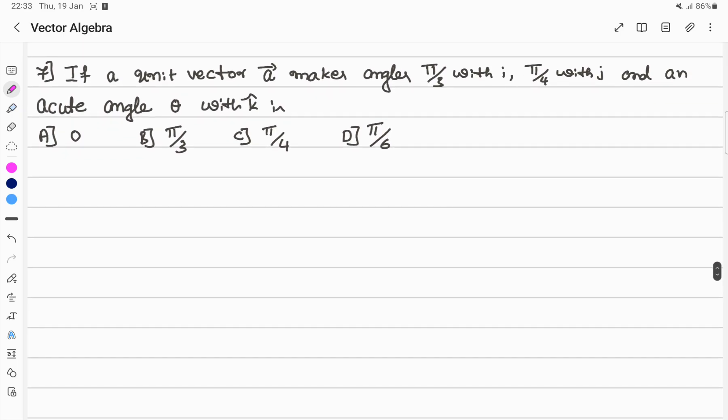Last question: A is a unit vector. It makes an angle pi by 3 with i, pi by 4 with j, and an acute angle with k. Find the angle with k.